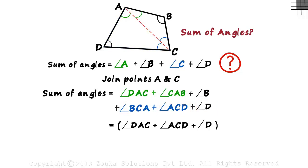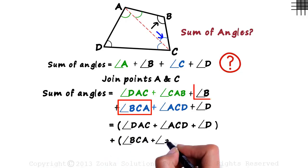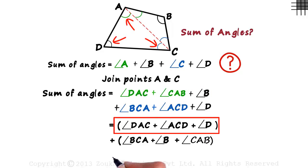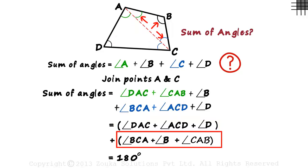And the second group can be written as angle BCA plus angle B plus angle CAB. And since the sum of interior angles of a triangle is 180 degrees, this expression will equal 180 degrees, and this expression as well will equal 180 degrees. The sum equals 360 degrees.